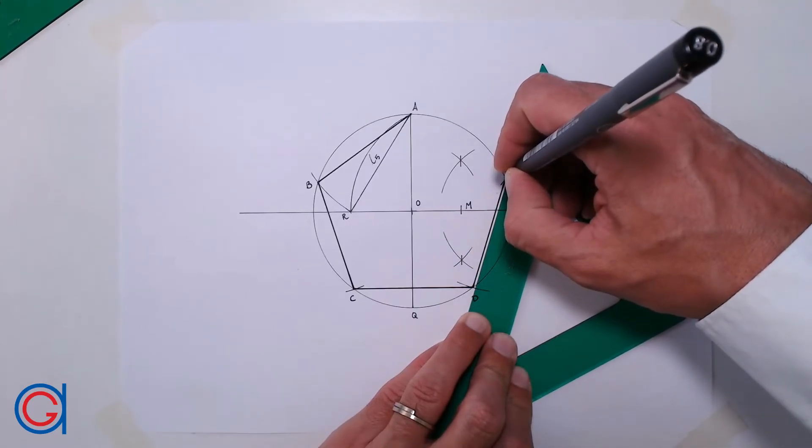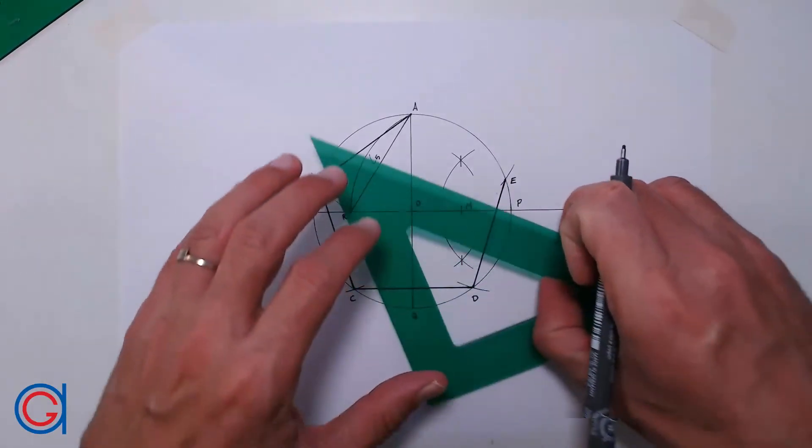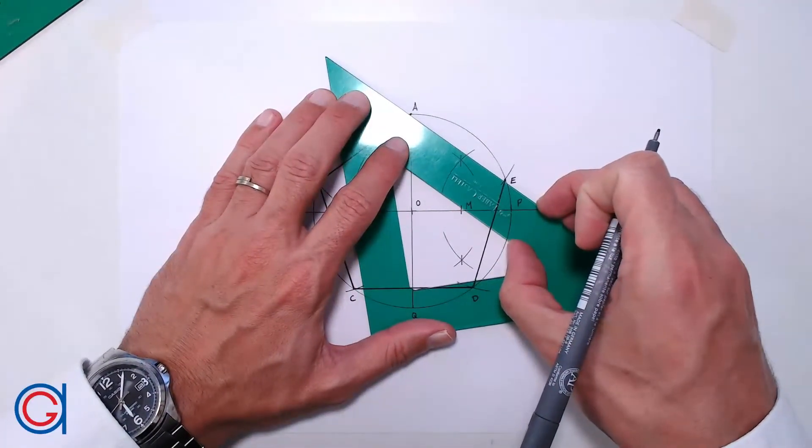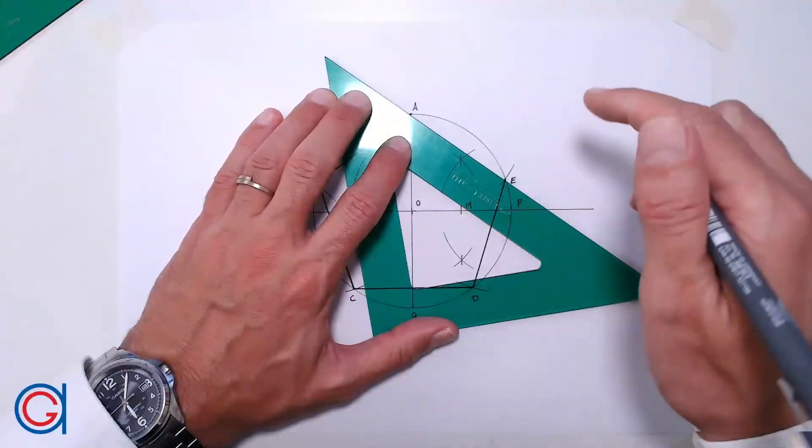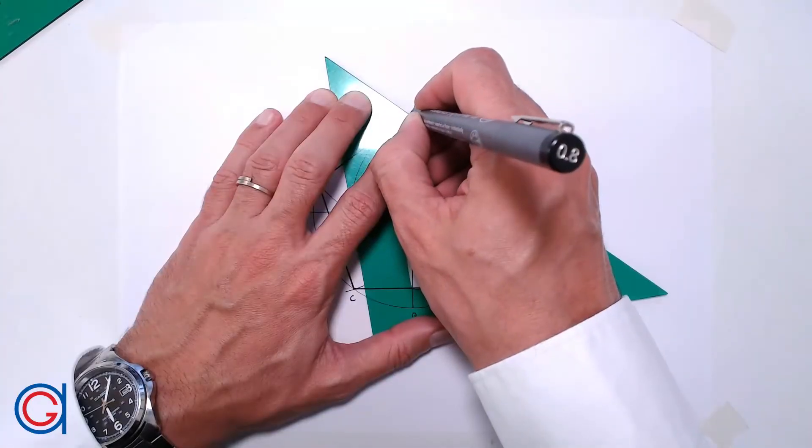And finally, we will complete our pentagon, joining the last two vertices, E to A, or A to E.